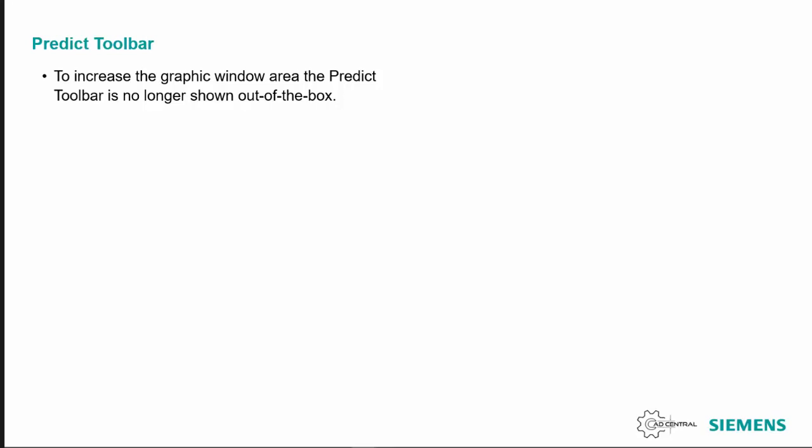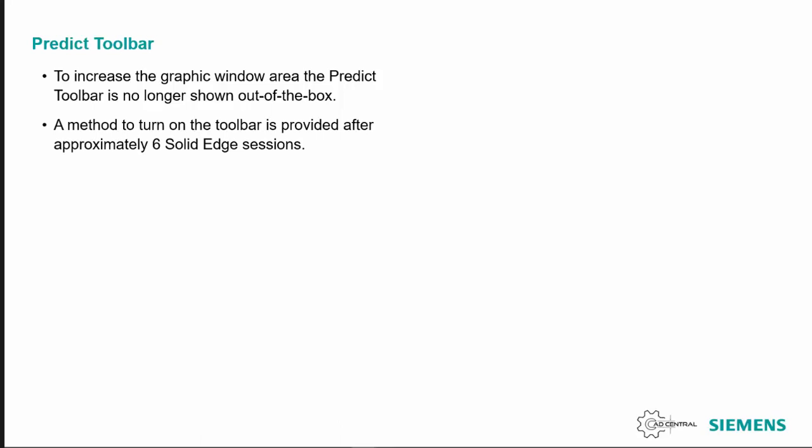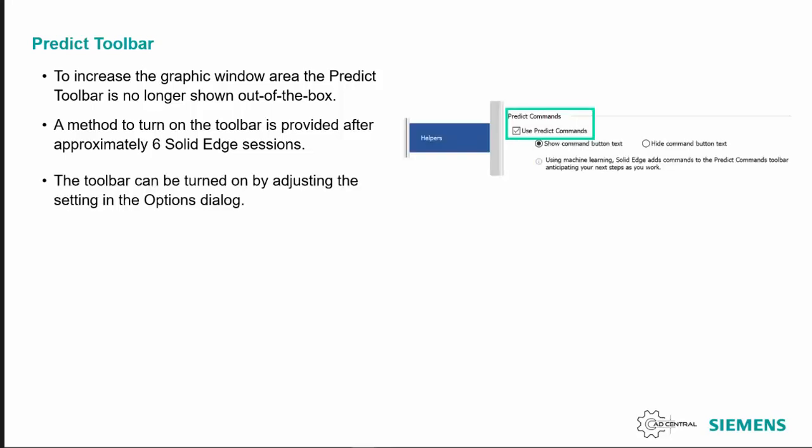The predict toolbar has been taken away out of the box, so you'll need to put that back in. After approximately six sessions in Solid Edge it will prompt you whether you want to put that back in or not. If you want to add it back at any point, you can go into the options dialog and under helpers you'll see there's a 'use predict commands' option in there.